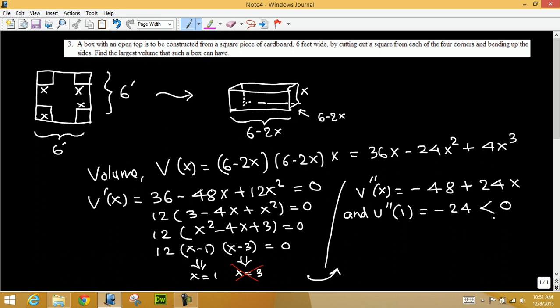So the second derivative at one is negative. That means the function, which is the volume function, is maximum at one.